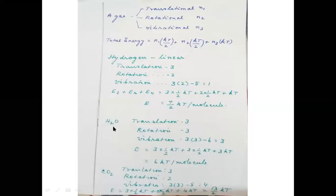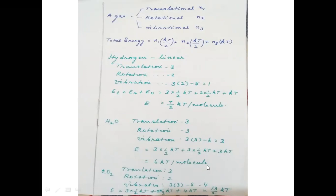For the water molecule H₂O: translation = 3 modes, rotation = 3 modes (nonlinear molecule), and vibrational modes = 3×3 − 6 = 3. So the total energy = 3×(½kT) + 3×(½kT) + 3×kT = 3/2 kT + 3/2 kT + 3kT = 6kT per molecule.